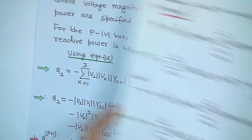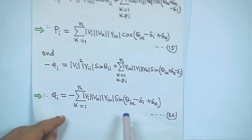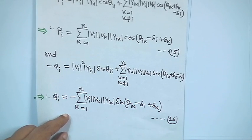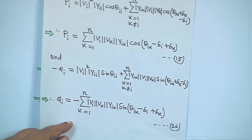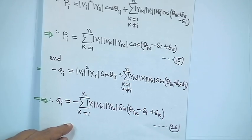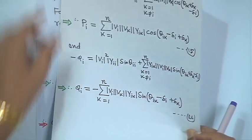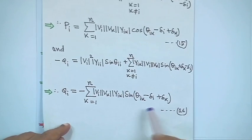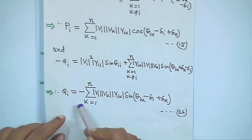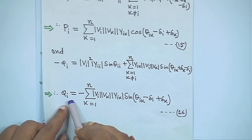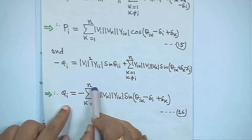Equation 16 is used with n = 3. At bus 2, which is the PV bus, Q₂ is not known. What we do is expand the equation for i equal to 2, with k summed from 1 to n (n = 3 for a 3-bus problem). Putting i = 2, the expression becomes: Q₂ = sum over k=1 to 3 of magnitude V₂ · V_k · Y₂k · sin(θ₂k − δ₂ + δk).